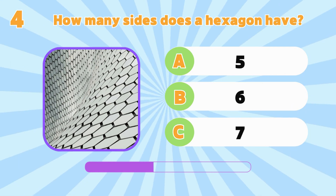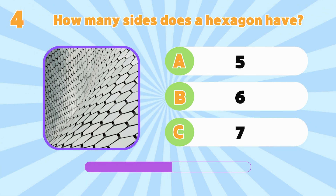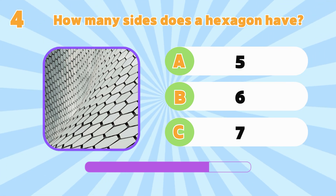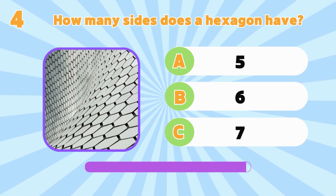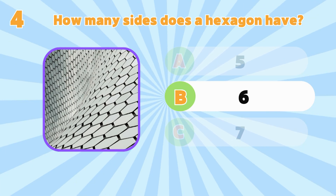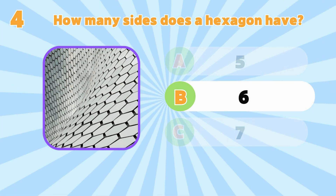How many sides does a hexagon have? Five, six or seven? It's six!